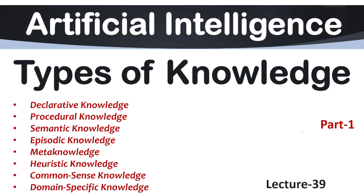Hi everyone, welcome back to the channel. Today in this session we are going to discuss different types of knowledge under knowledge representation of AI. We have eight types: declarative knowledge, procedural knowledge, semantic knowledge, episodic knowledge, meta knowledge, heuristic knowledge, common sense knowledge and domain specific knowledge. We will discuss all these types in detail with real life examples and a comparison between all of them. So let's start the session.